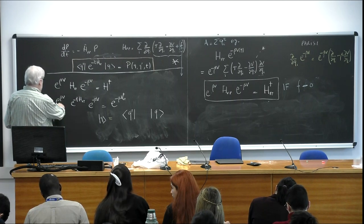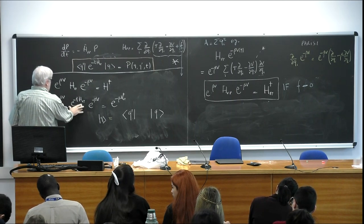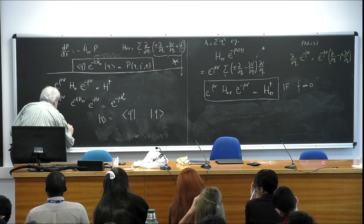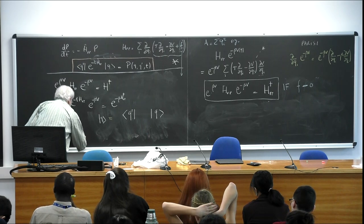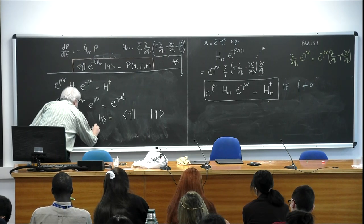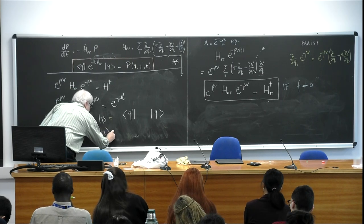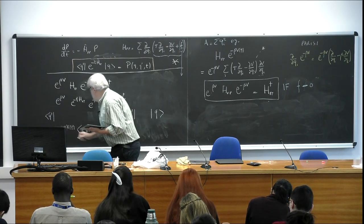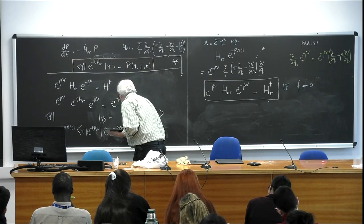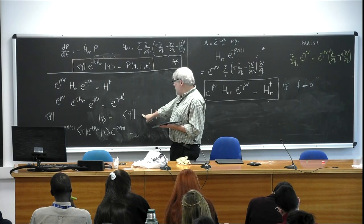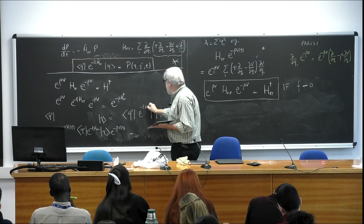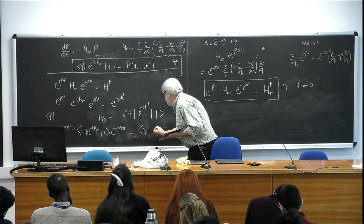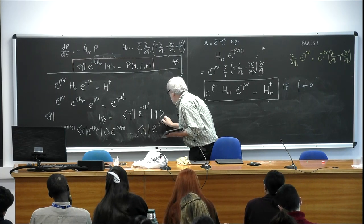When I sandwich this, Q prime simply evaluates, and I get this. On the right-hand side, I sandwich e^{-tH^†}. But you know that the dagger is transposing, so this will transpose — and this will simply be H. We're almost there.